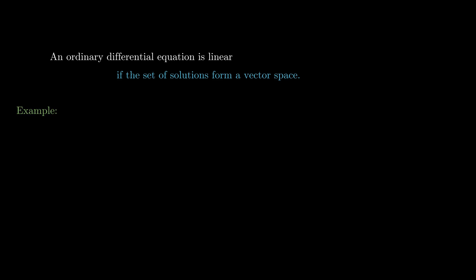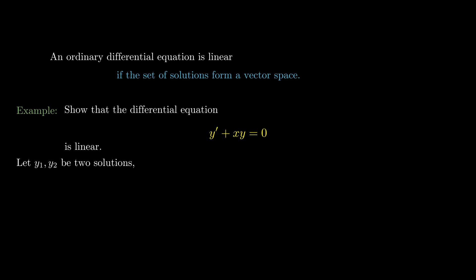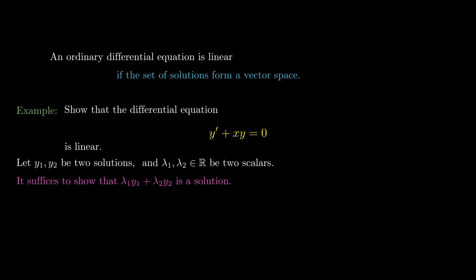To test our understanding of this concept, let's show that the differential equation y' + xy = 0 is linear in the sense that the set of solutions forms a vector space. So let y₁ and y₂ be two solutions to this ODE, and let λ₁ and λ₂ be real scalars. We need to show that if we add two solutions we get a solution, and if we scale a solution we get a solution. In particular, it suffices to show that λ₁y₁ + λ₂y₂ is a solution.